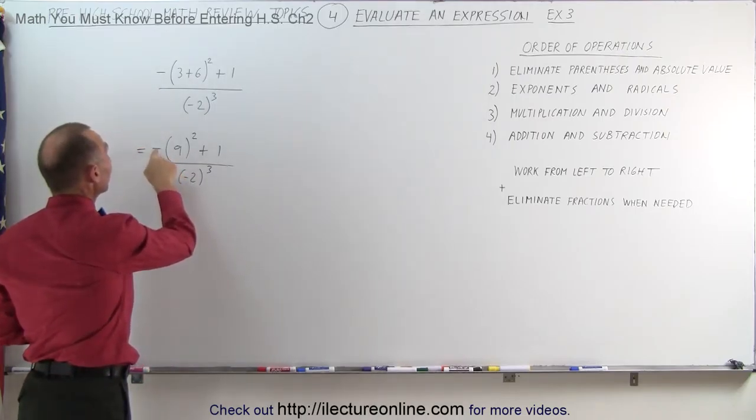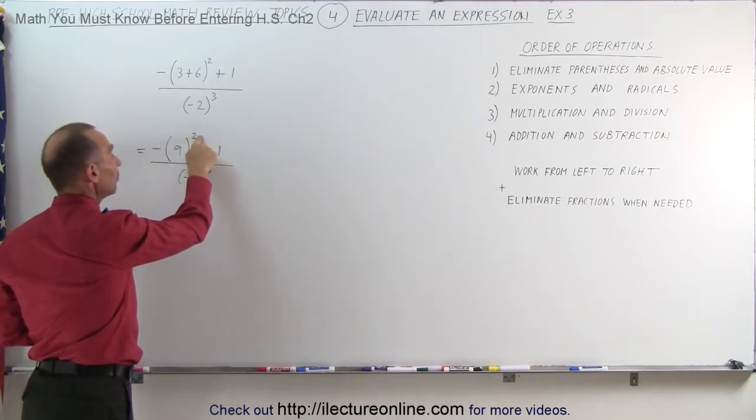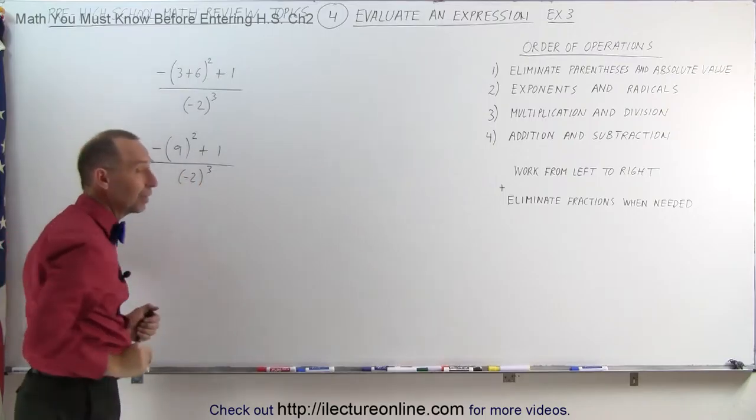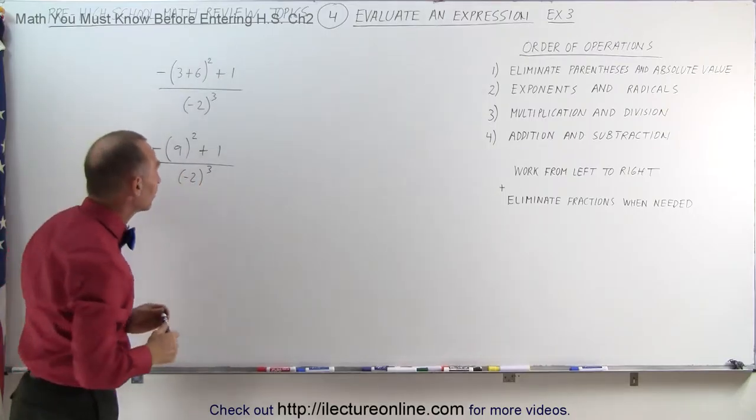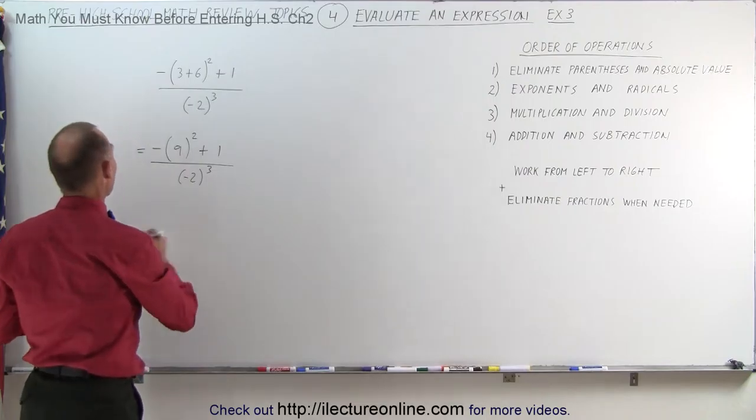Now you can see here that in the numerator this negative sign is not affected by the exponent. But in the denominator, since the negative sign is inside the parentheses, it is affected by the exponent. So next we can write it out.